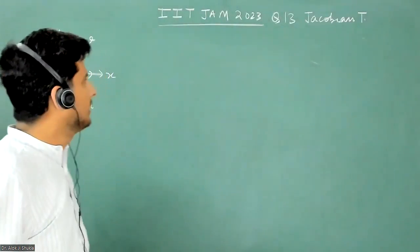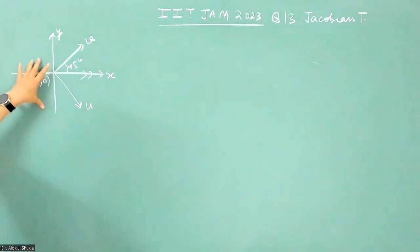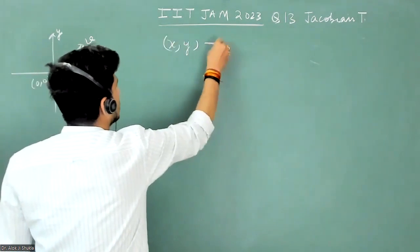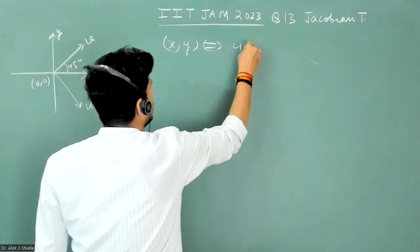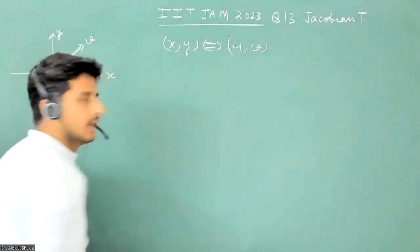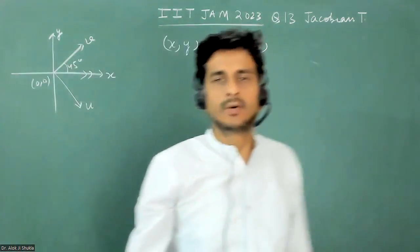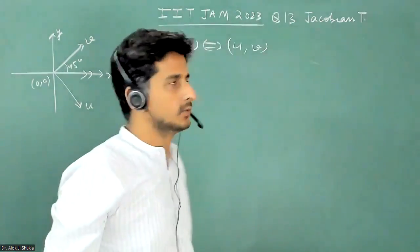This question is based on Jacobian matrix in which there is a transformation that is given from x, y to some coordinate u, v according to the rule given in the figure, and you have to calculate that transformation matrix.